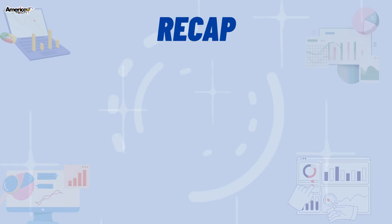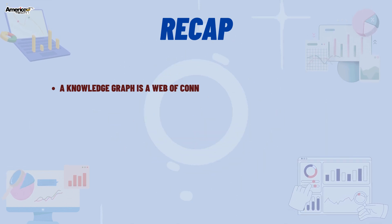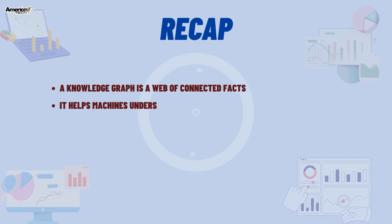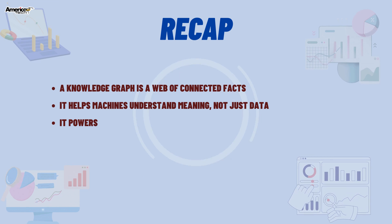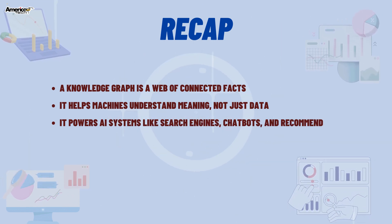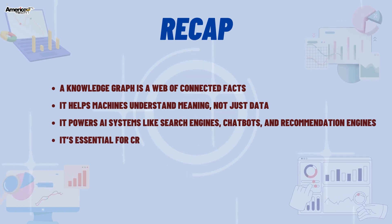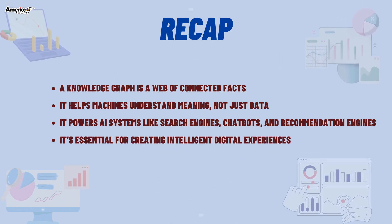A Knowledge Graph is a web of connected facts. It helps machines understand meaning, not just data. It powers AI systems like search engines, chatbots, and recommendation engines. It's essential for creating intelligent digital experiences.